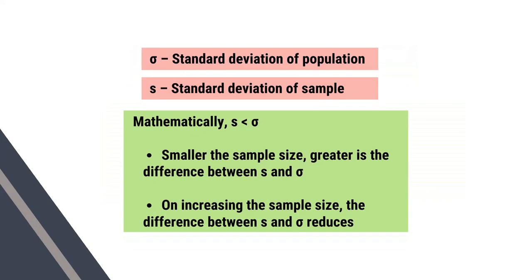Standard deviation of the population is denoted by sigma. Standard deviation of the sample is denoted by S. Mathematically, standard deviation of the sample is less than the standard deviation of the population. The smaller the sample size, the greater is the difference between the standard deviation of the population and the standard deviation of the sample. On increasing the sample size, the difference between S and sigma reduces.